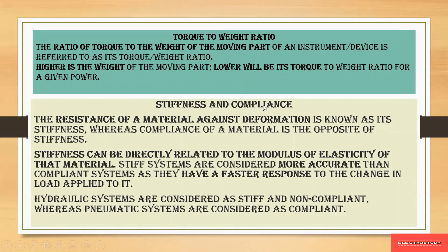The next characteristic is stiffness and compliance. Stiffness is the resistance of a material — it can be directly related to the modulus of elasticity. When elasticity keeps increasing, the material can deform back to its original position once released, like a rubber band. Stiff systems are considered more accurate than compliant systems as they give faster responses, since after deformation they return to their original position quickly.